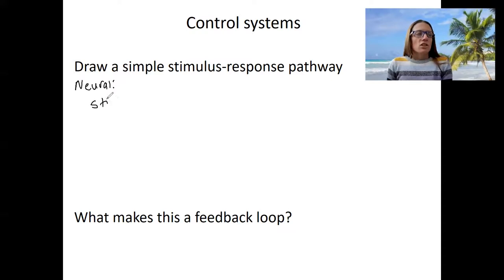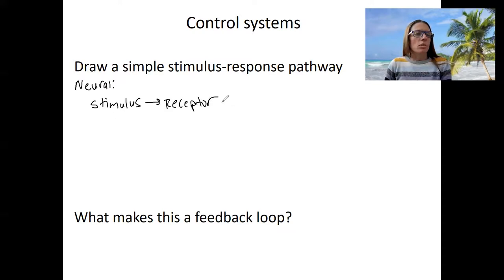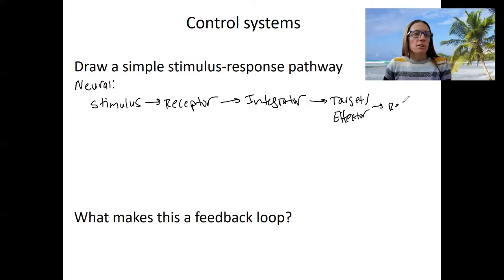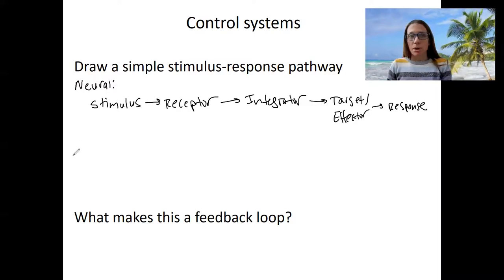The generic pathways are going to be pretty similar, so there should be no surprise in what I'm about to draw. These components: stimulus, receptor, integrator, effector, response. For example, a tap on the patellar tendon causing a kick of the leg. Now, this is a stimulus response pathway — this is not a feedback loop.